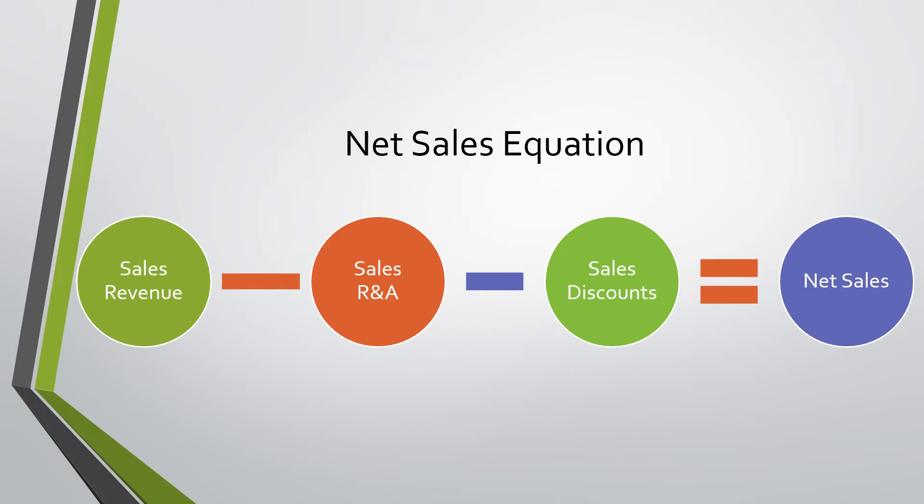Just to rephrase it, the net sales equation is sales revenue minus sales returns and allowances minus sales discounts.